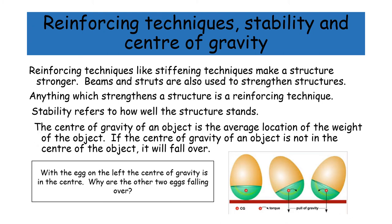Reinforcing techniques, stability and center of gravity. Reinforcing techniques, like stiffening techniques, make a structure stronger. Beams and struts are also used to strengthen structures. Anything which strengthens a structure is a reinforcing technique. Stability refers to how well the structure stands. The center of gravity of an object is the average location of the weight of the object.